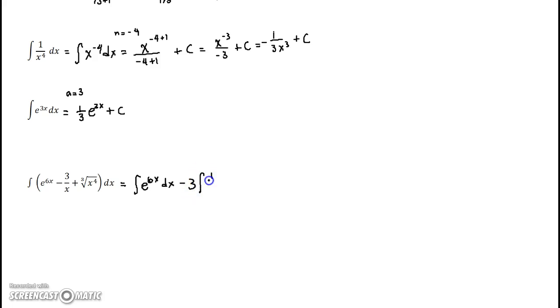So we have 1 over x dx. All I do is pull these three out and I'm left with 1 over x. And then plus here, this one I can write it as x to the 4 thirds. And each one of these looks like a rule. This one looks like rule number 3, this one looks like rule number 2, and this one looks like rule number 1. So I just apply the corresponding rules now.